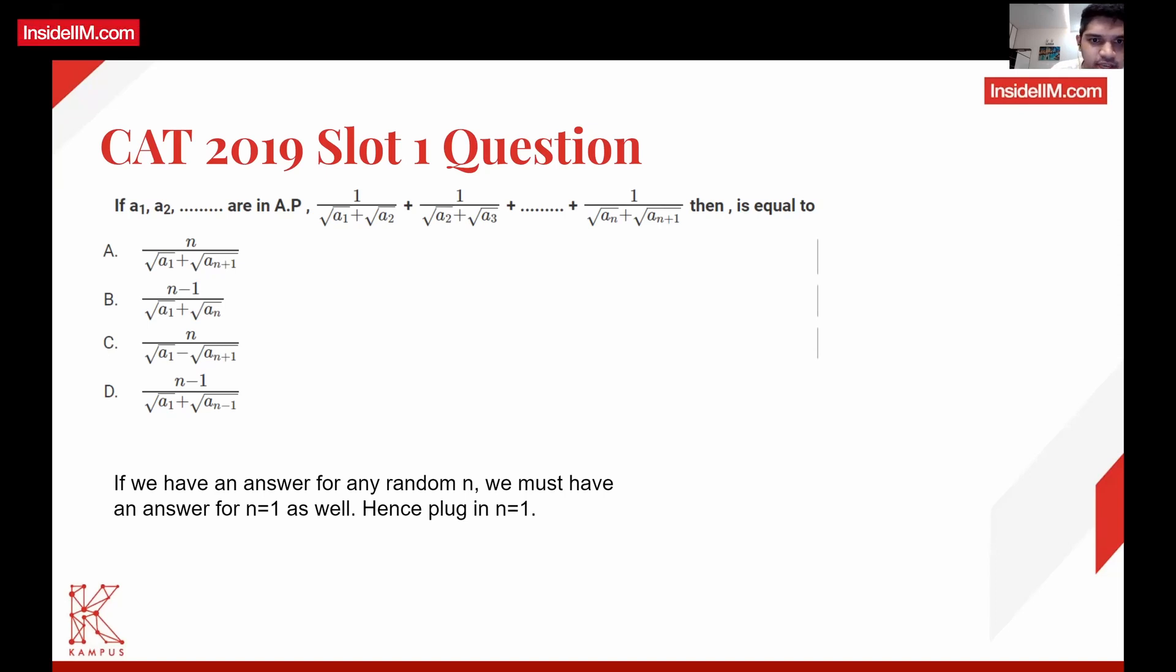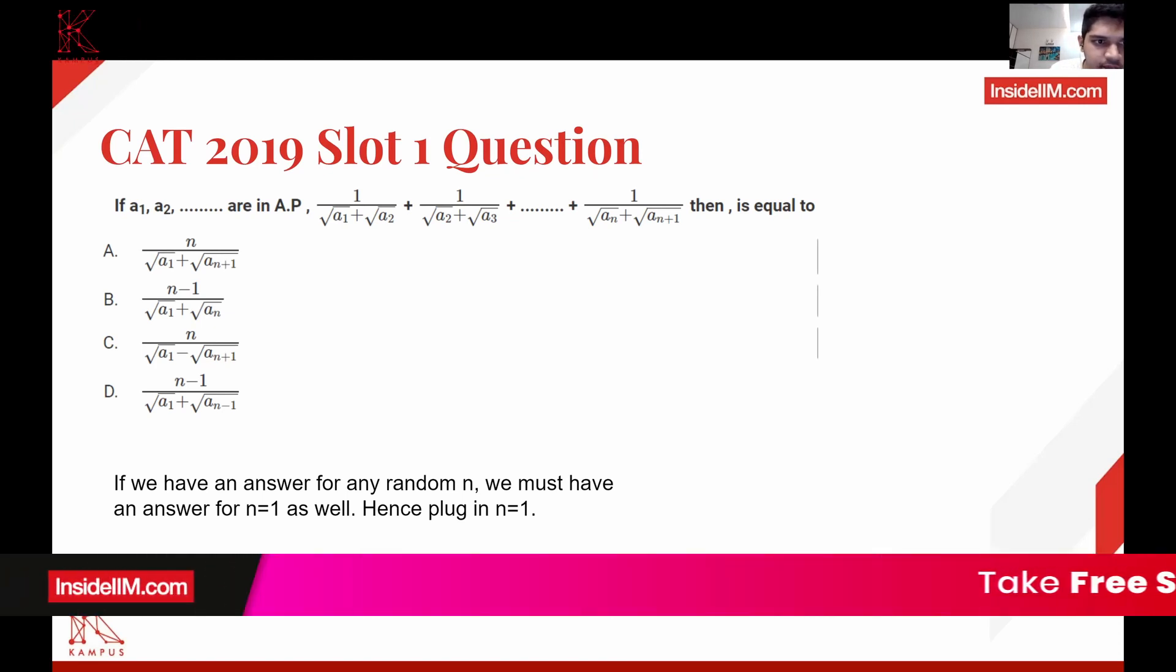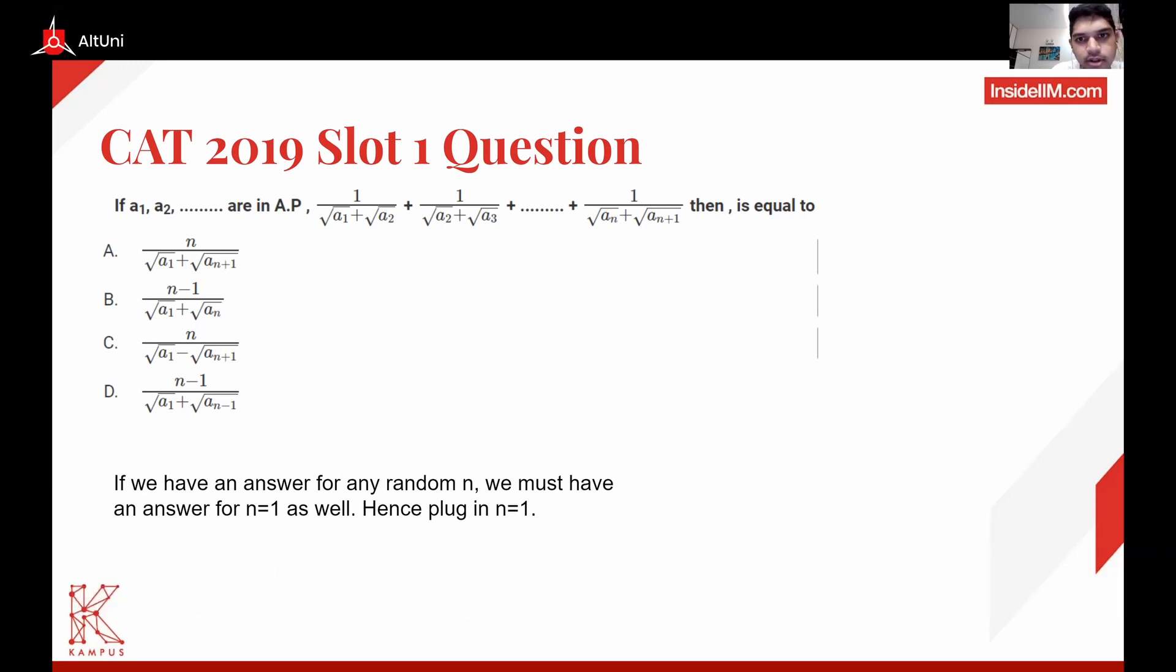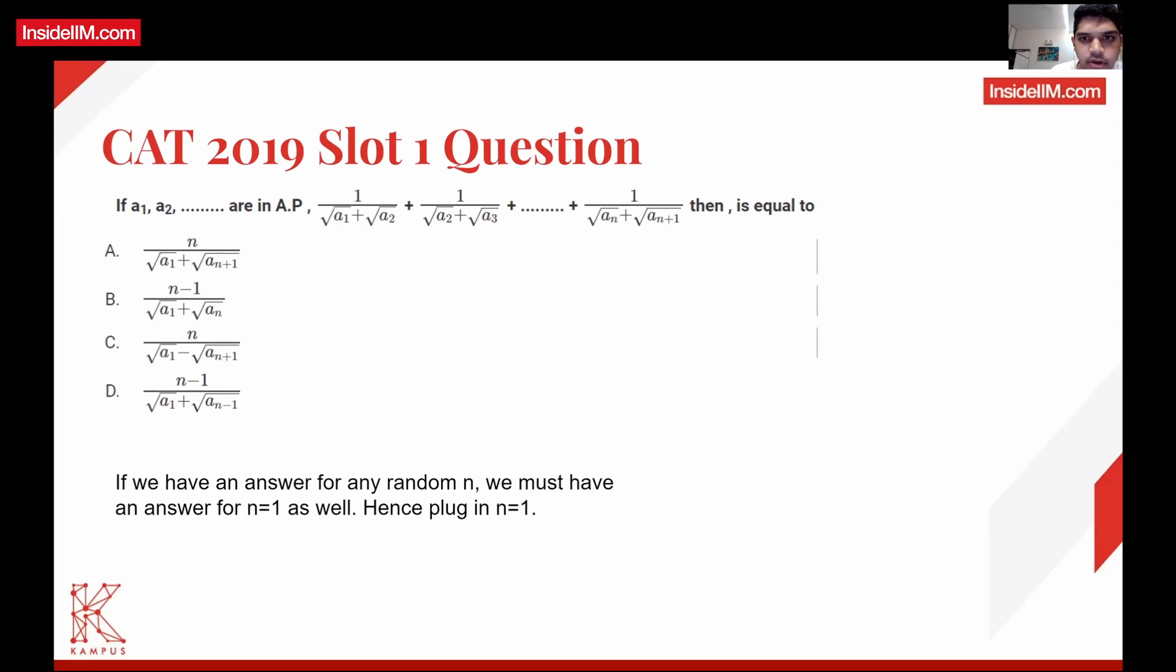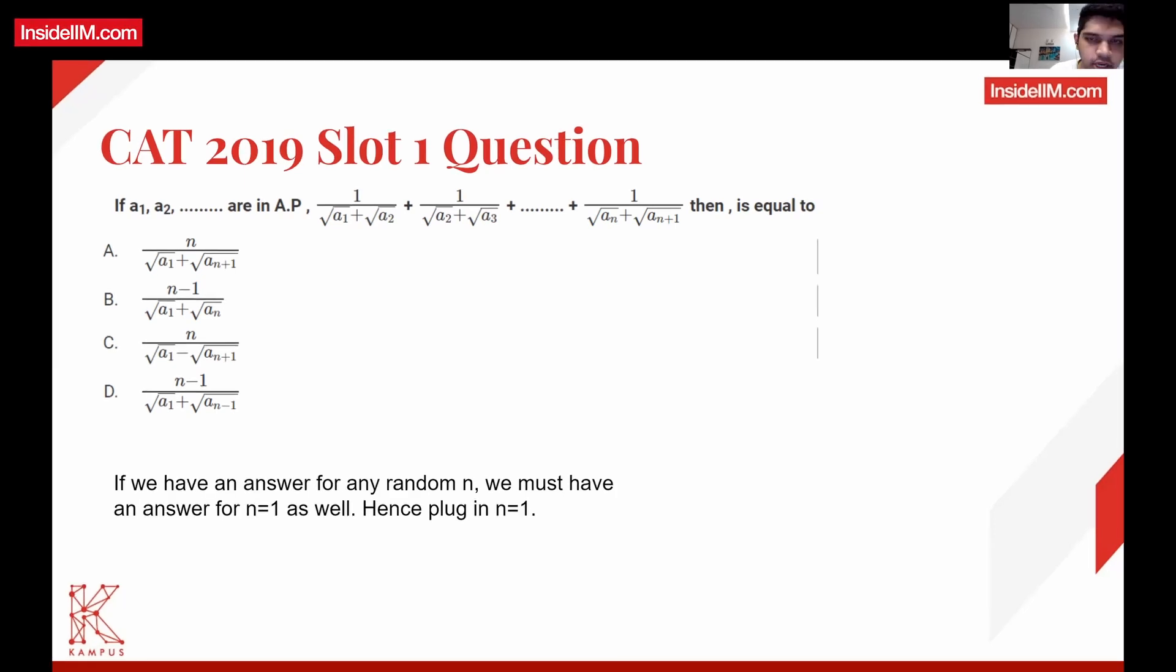One more thing: sometimes there are trick questions to catch this. For example, if they had an option like root n by root a1 plus root an+1, you would have got stuck because that will also satisfy n = 1. So you need to know how to solve this, and this option elimination is just something you apply when the time is right. You shouldn't waste time substituting options for every question. You need to practice and learn when it's the right time through mocks.